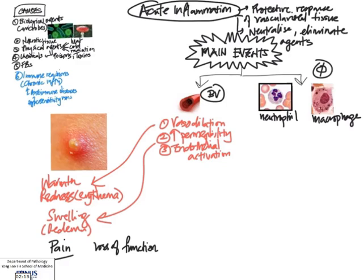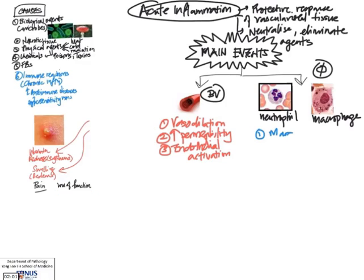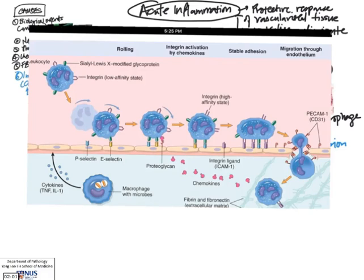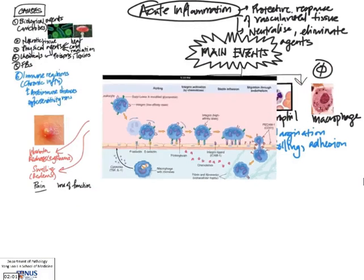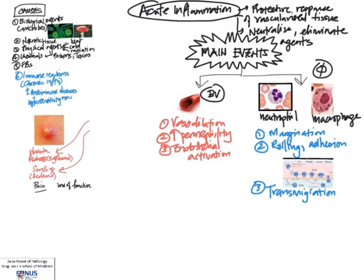Now let's look at the cellular events in acute inflammation. The leukocytes have to first get out of the blood through the wall of the blood vessels. The very first step is margination — when the white blood cells move towards the edge of the blood flow near the wall of the blood vessel. Then they start to roll along the endothelial cells and adhere to them. This is a diagram from Robbins, and you can see neutrophils within the vessel lumen. The cells are marginating, rolling, and then start to adhere. Finally, they move through the wall between the endothelial cells — this process is called transmigration, also known as diapedesis — and then move to the tissue site of injury.